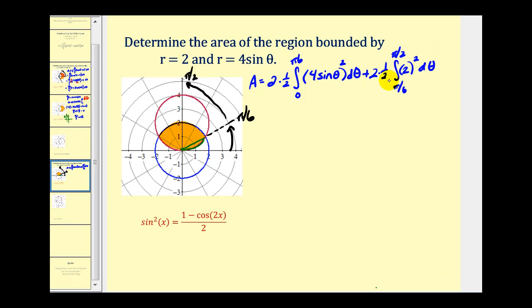Now let's go back and see if we can evaluate these definite integrals. Notice that in both cases we have two times one half, so that'll simplify out. So we're going to have from zero to pi over six, sixteen sine squared theta, d theta, plus the definite integral from pi over six to pi over two, of four d theta.